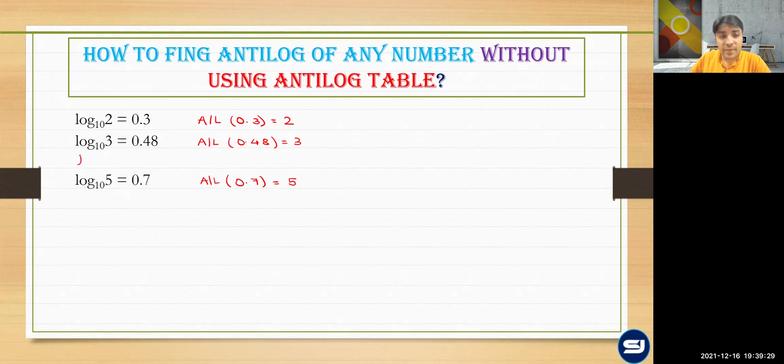Now, if I talk about log of four, we know that will be equal to log two square, which is equal to 0.6. Then log six could be found as log two into three, which is addition of these two values, which is 0.78.